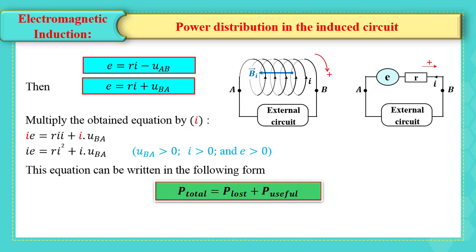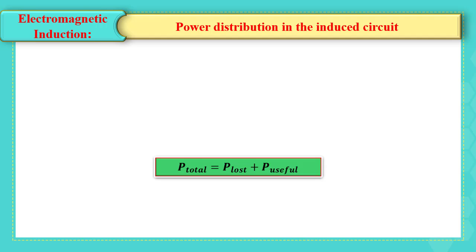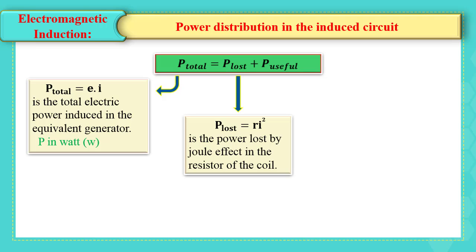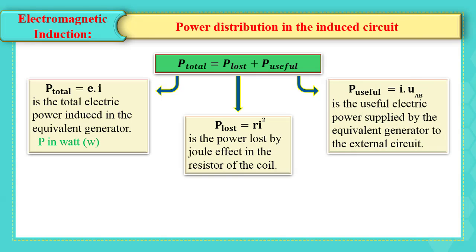P total equals P lost plus P useful, where P total equals EI is the total electric power induced in the equivalent generator, and the unit of P in SI units is Watt, while P lost equals Ri squared is the power lost by Joule effect in the resistor of the coil, and P useful represents the useful electric power supplied by the equivalent generator to the external circuit.